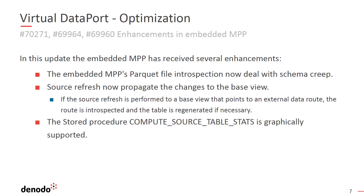This update adds several enhancements to the embedded MPP engine added to the Denodo platform in the previous update. The parquet file introspection from the embedded MPP helps in avoiding schema creep. Schema creep refers to the gradual and often unintended changes that occur to the structure or organization of data in a schema. This could happen when the schema changes while adding and removing columns, since we should ideally inspect all partitions and include all columns in the view. The introspection also checks the length of the column. When we create base views over elements stored in the MPP database, we can now configure the number of files the data source will process to generate the schema of the base view, as in its fields. This feature makes it easier to deal with schema creep.